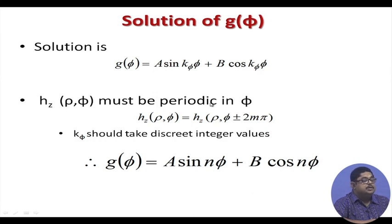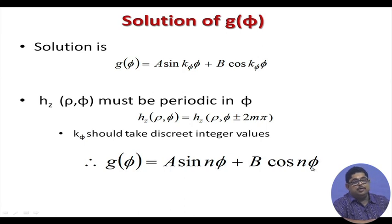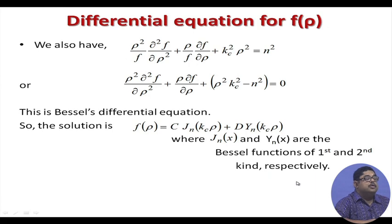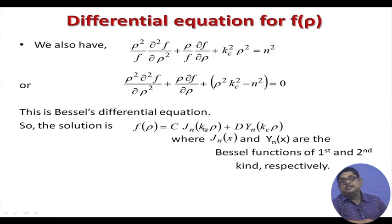h_z must be periodic in phi. So if you change phi, the function — this time it is the transverse magnetic field phasor — should be the same. Therefore, k_phi must take discrete integer values. That is why we rename it n to remind us it takes integer values. For the rho variation part, the resulting equation is the Bessel equation — an important equation in engineering mathematics. This is a second-order differential equation, and its solution was given by the scientist Bessel.